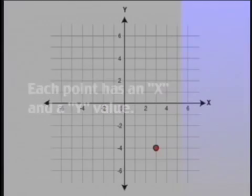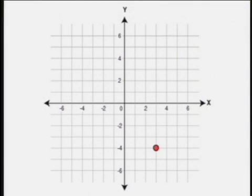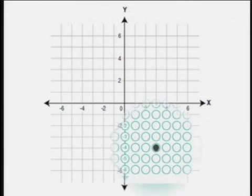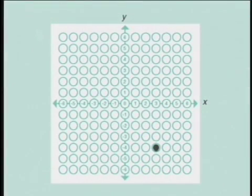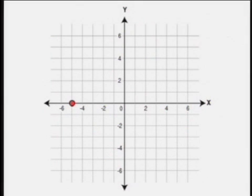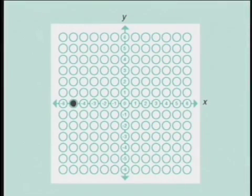For example, if the answer for a question was 3, negative 4, this point would be filled in. On the other hand, if the answer for a question was negative 5, 0, this point would be filled in.